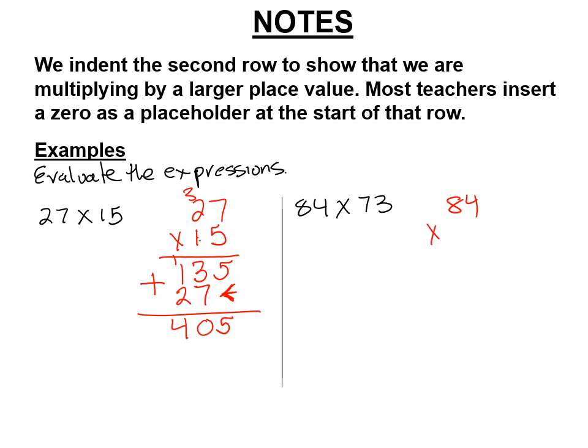So 84 times 73. 3 times 4 is 12. Carry the 1. 3 times 8 is 24. Plus 1 is 25. I'm stepping over or pushing over. 7 times 4 is 28. Carry the 2. 7 times 8 is 56. Plus 2 more is 58. Adding up the 2 rows. And that number is 6,132.